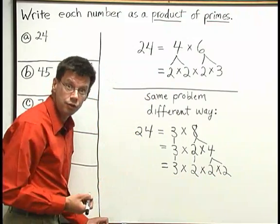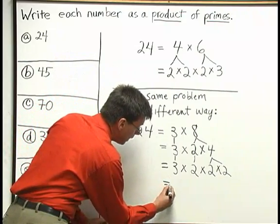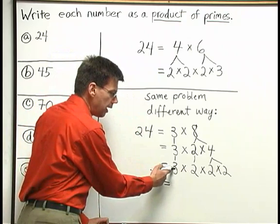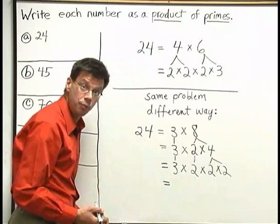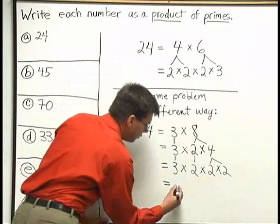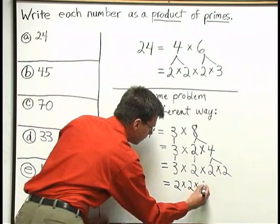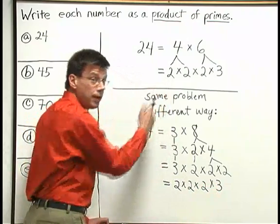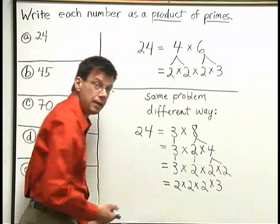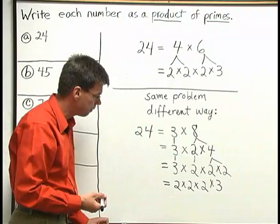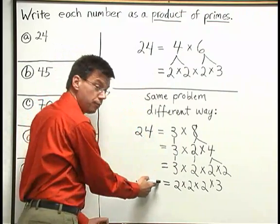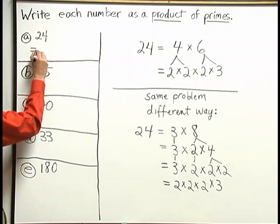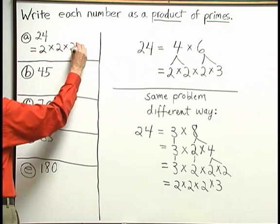There's one more thing I like to do with this type of answer: I like to rewrite my answer with the numbers in order from smallest to largest. It's okay to write the answer as 3 times 2 times 2 times 2, but if I rewrite it with the smallest numbers first — the 2s — and then the 3 on the end, it makes it easier to compare my answer to other ways people may have done the problem and to check an answer in the back of the book. Our final answer for 24 is 2 times 2 times 2 times 3.